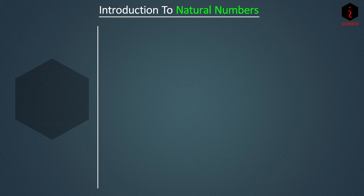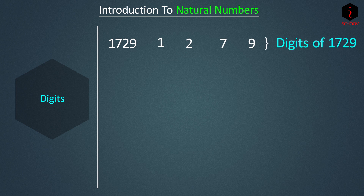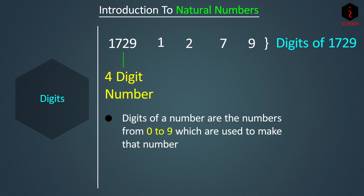What are digits of a number? Take the number 1729. It is made up of 1, 2, 7, and 9 — these are called the digits of 1729. So 1729 has four digits and is a four-digit number. Digits of a number are the numbers from zero to nine used to make that number. For example, the number 1 has one digit (which is 1), and the number 7 has one digit (which is 7).